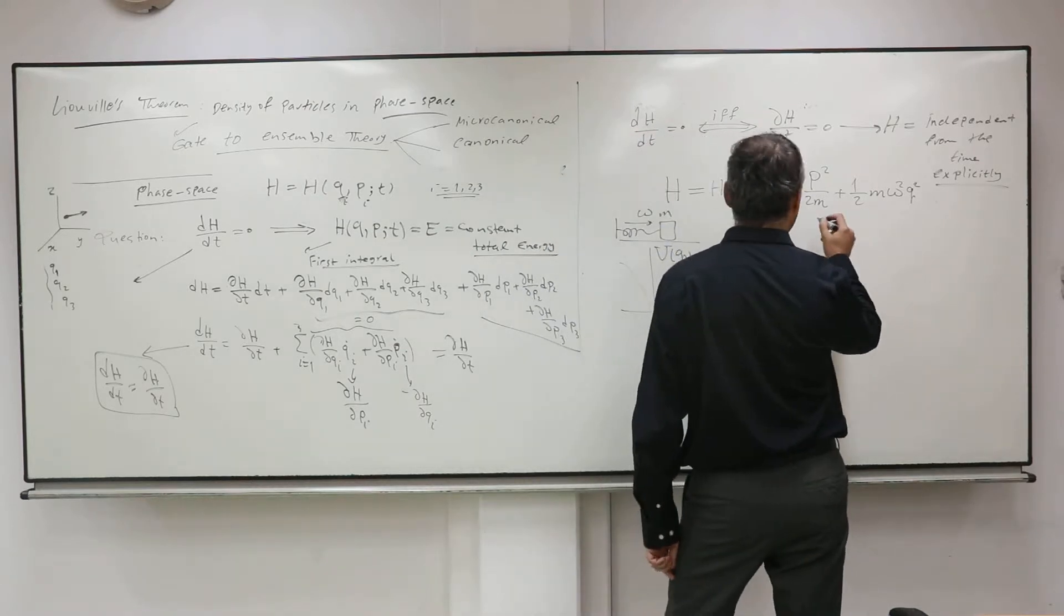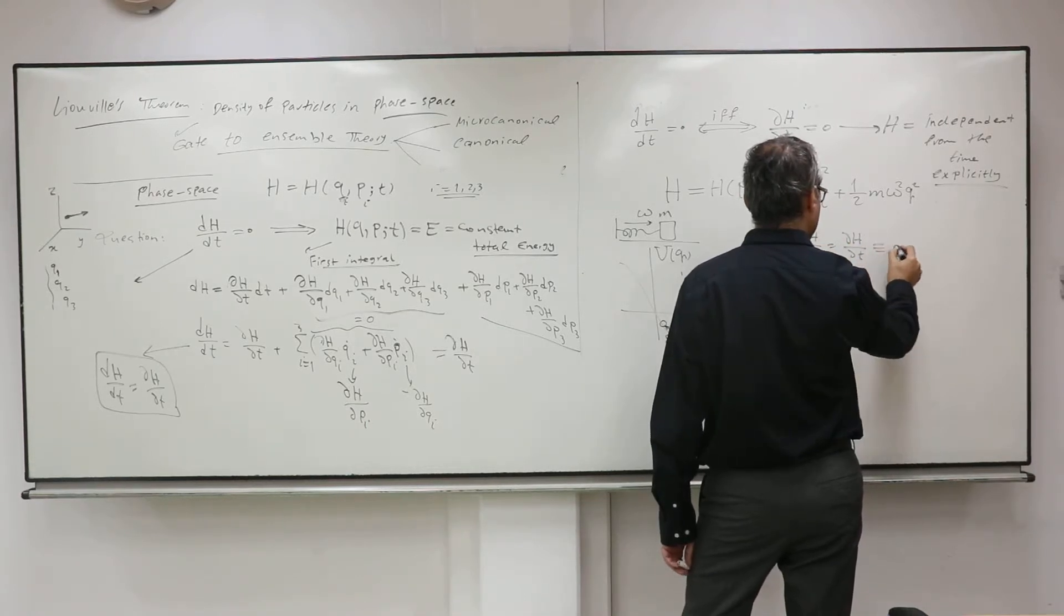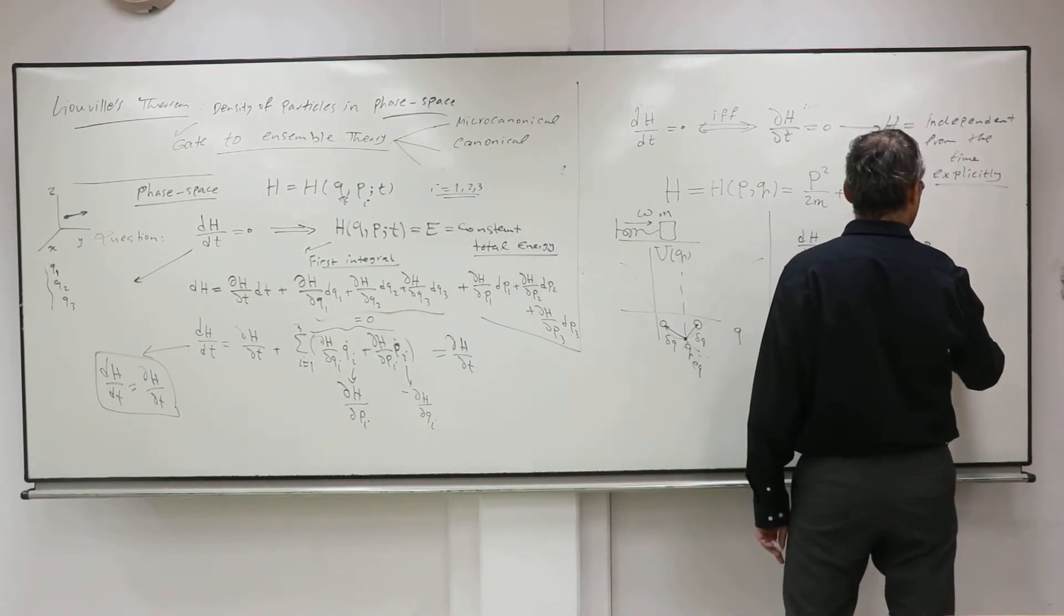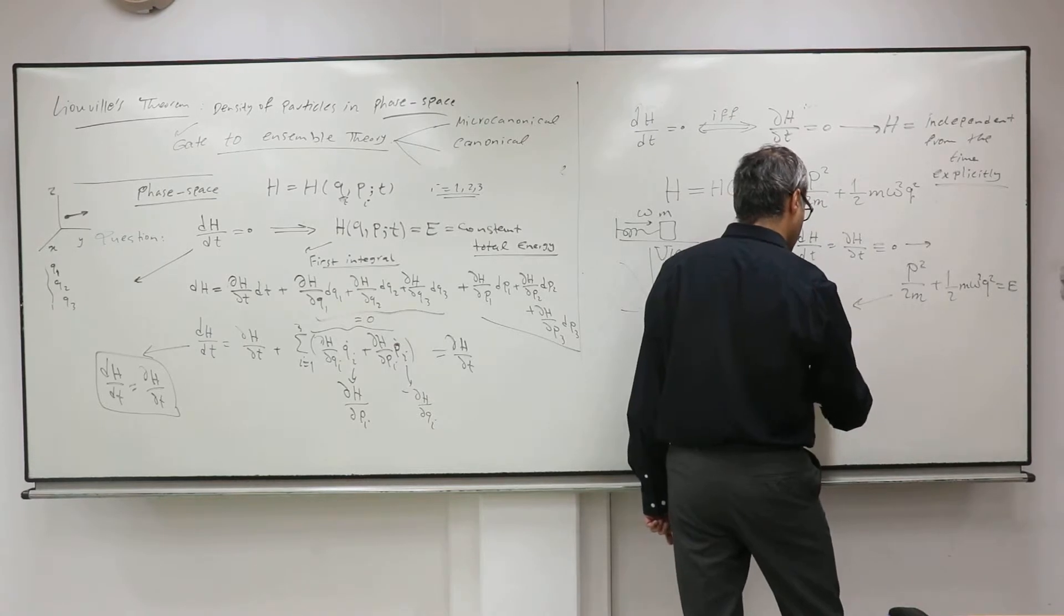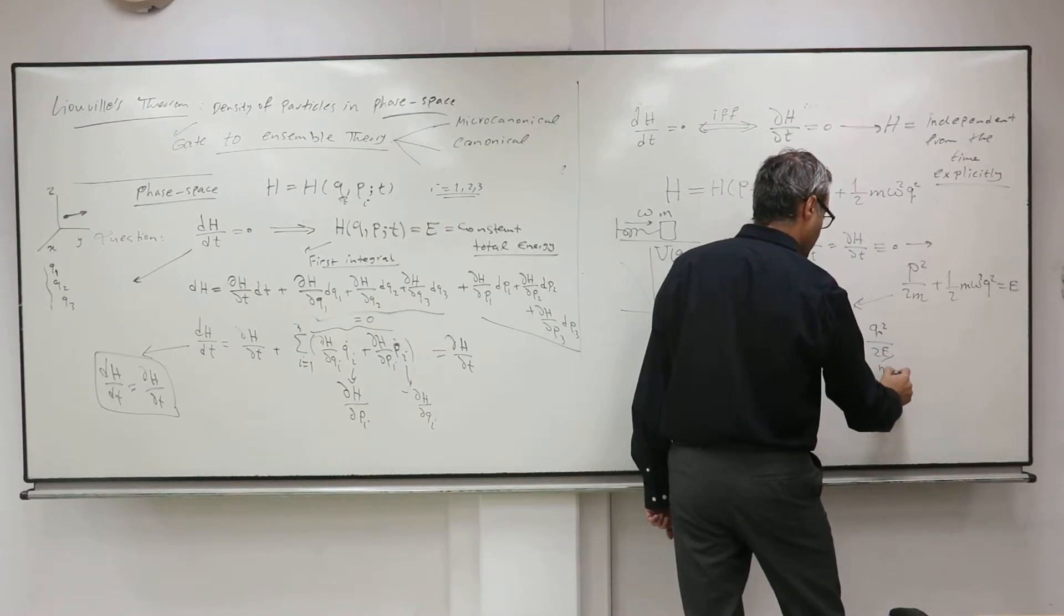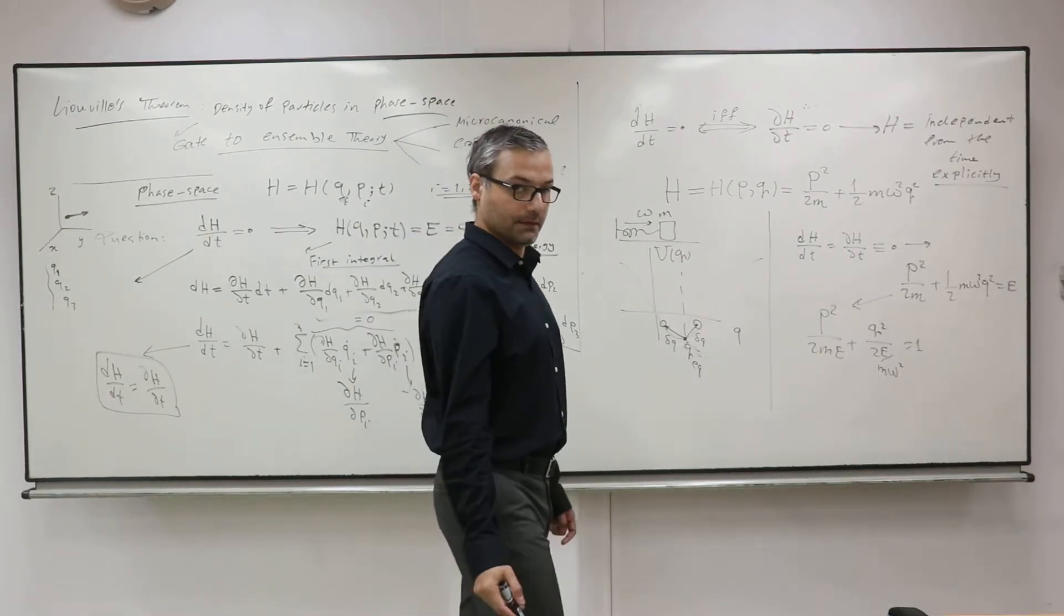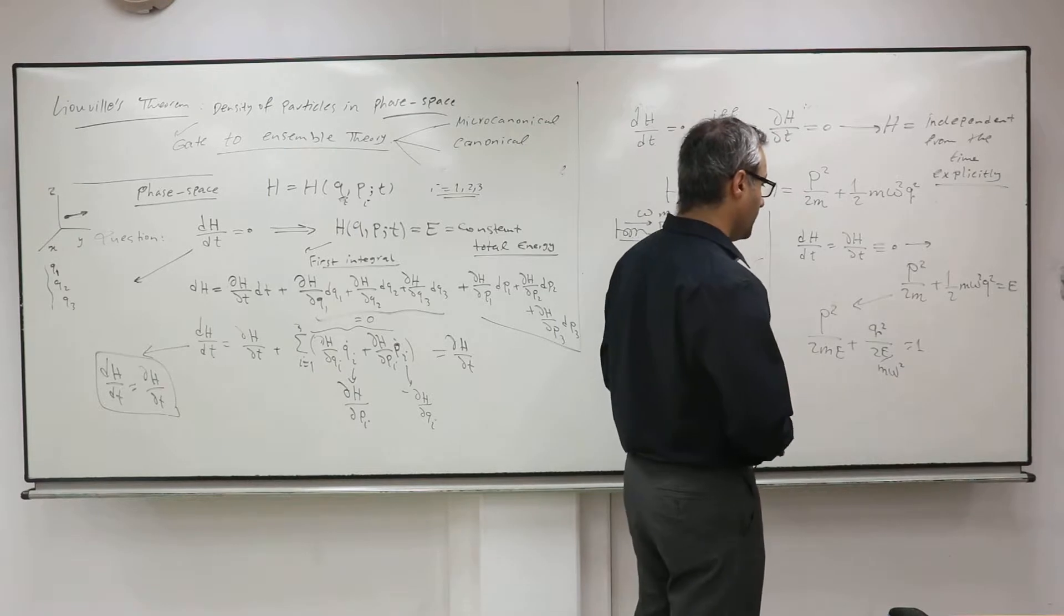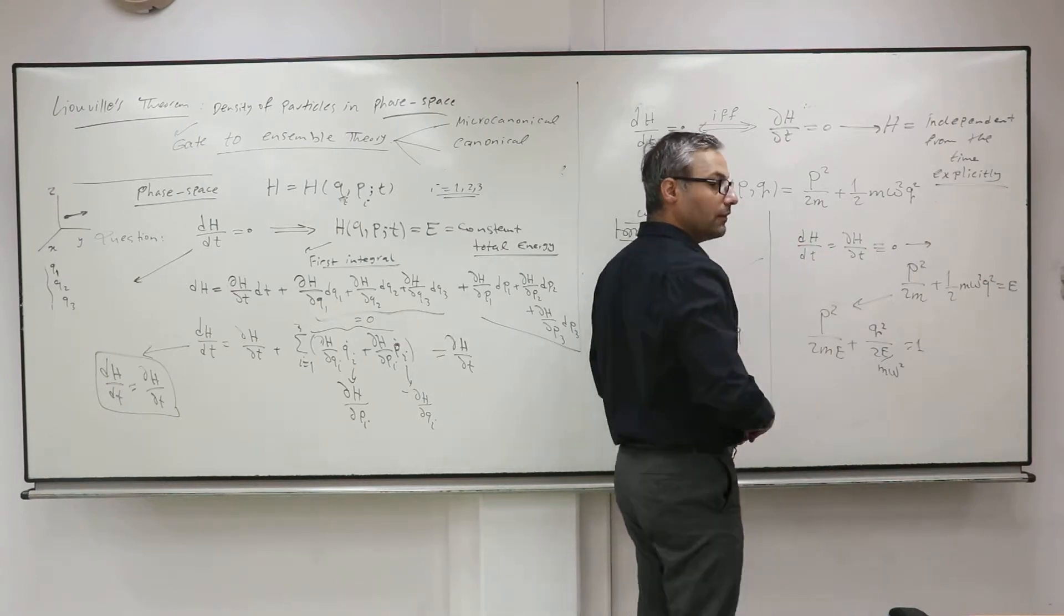So look at that for this system. So explicitly there is no time here. So dH/dt and the partial derivative of this, so that's zero. So you can say that, you can find a case of the system where the system have the constant Hamiltonian. So this is, and you can just divide that by this.